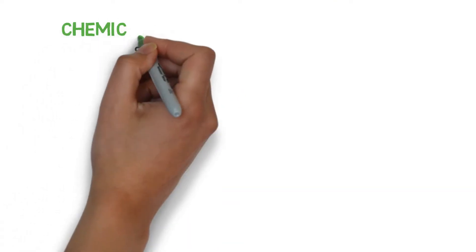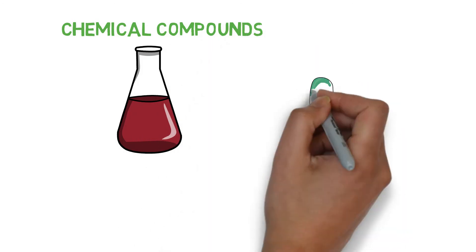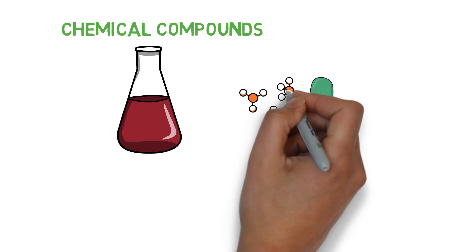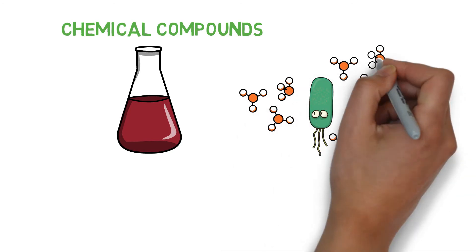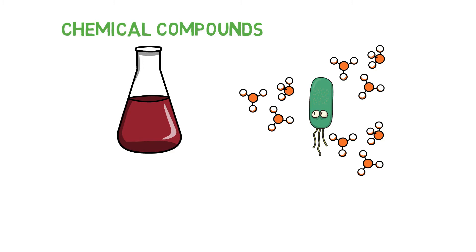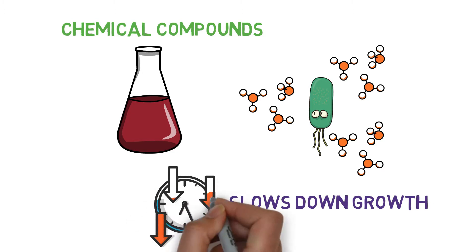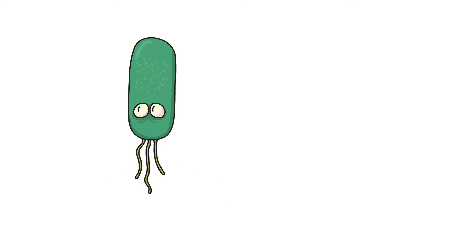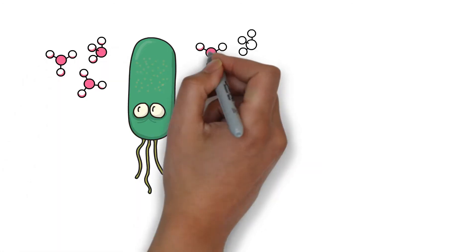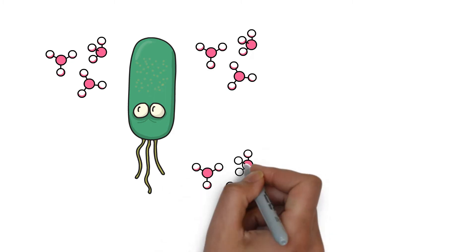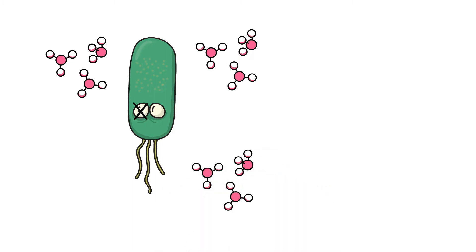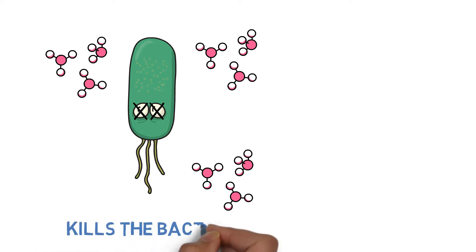Antibiotics are special chemical compounds which target bacteria by either slowing down their growth, so that the bacterial cell cannot multiply as fast, slowing down the rate of infection, or they can be lethal to the bacterial cell, attacking its structure so that it kills the bacteria and prevents it from spreading the infection further.